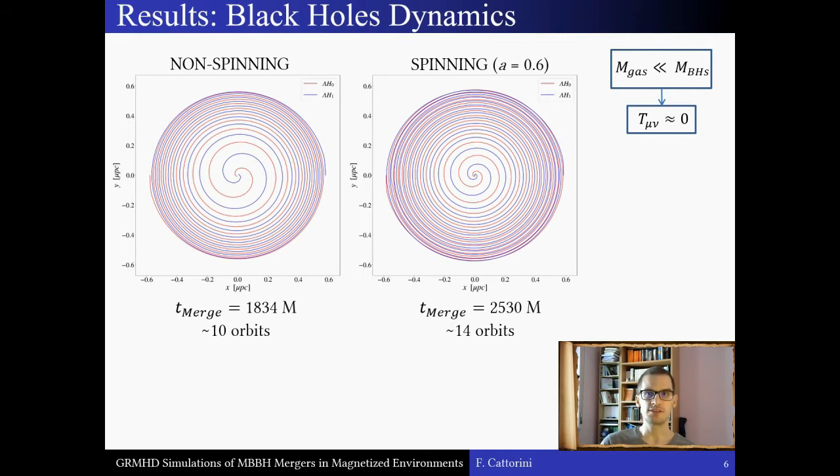In these two figures, we see that the binaries of spinning black holes take longer to merge. In the plots, we see the orbital motion of the black holes' apparent horizons. The spinning binary needs approximately four more orbits and more time to get to coalescence. This is due to a leading order spin-orbit effect, which promotes or delays the coalescence according to the sign of the spin-orbit coupling.